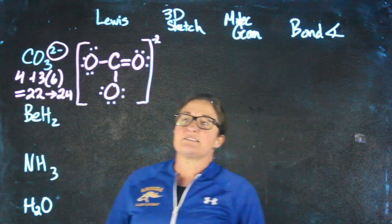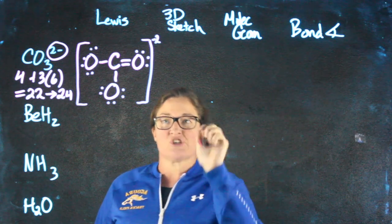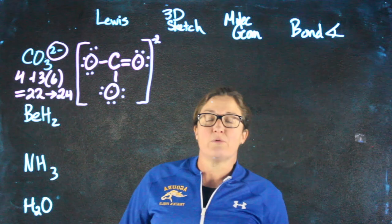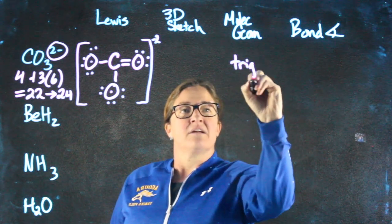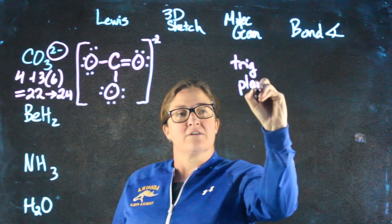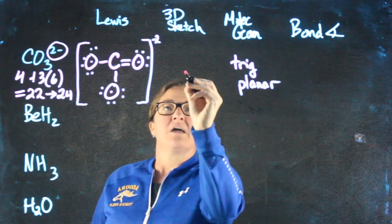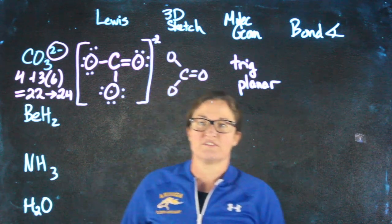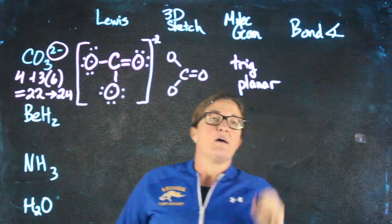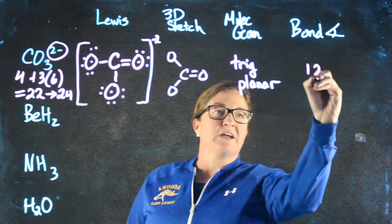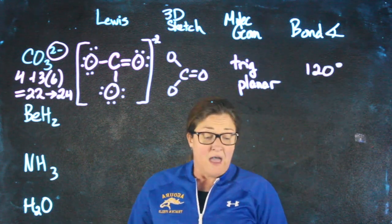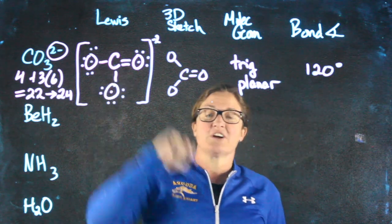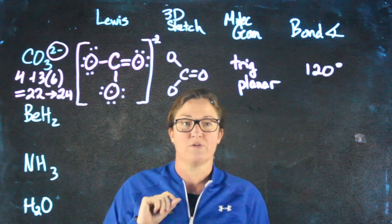When I see something with 3 atoms attached, 1, 2, 3, and no lone pairs, that tells me this is going to be trigonal planar. If I wanted to show what it looks like in 3D, it looks like a circle split up three different ways. The bond angle associated with trigonal planar is 120 degrees. Again, these decisions are made off of how many atoms are attached to the central atom and how many lone pairs there are.